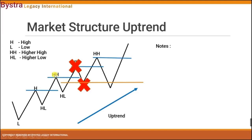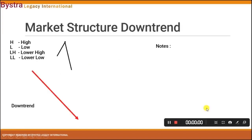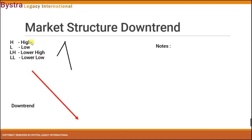You will have this higher high, higher low, your higher high, and this will be your new higher low. Now let's look at the market structure for downtrend. Same as the uptrend, where you need to identify and know the high, the low, the lower high, and the lower low.